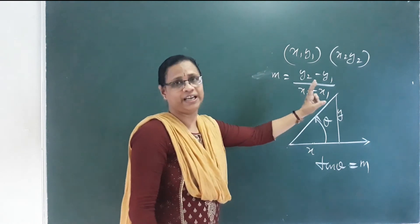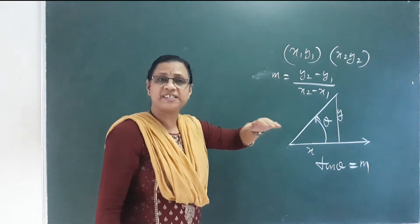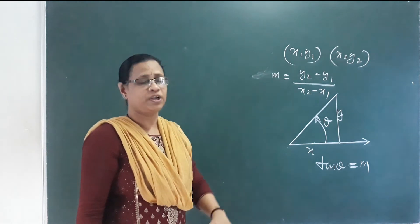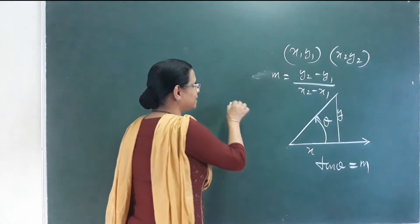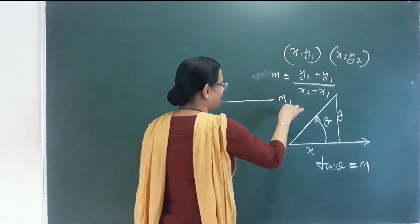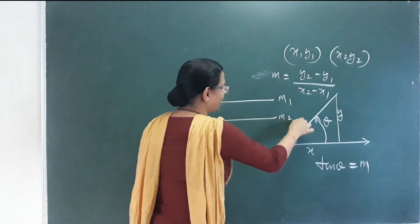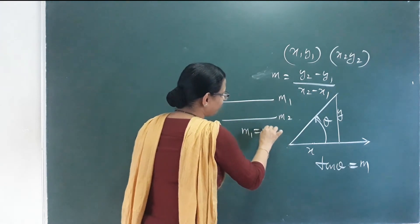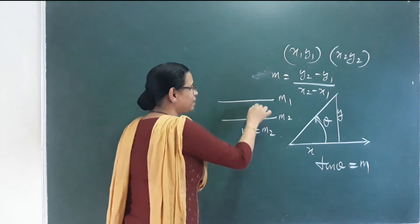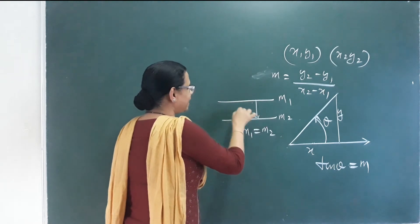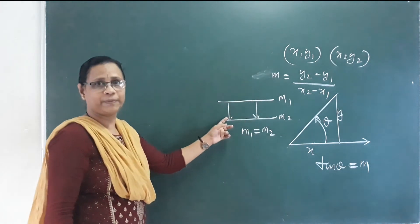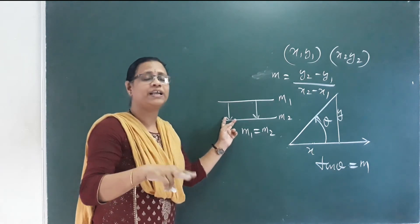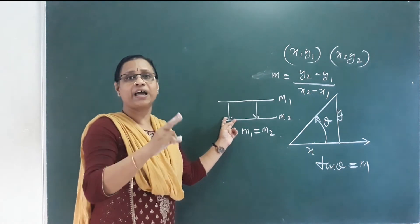There are two lines with slopes M1 and M2. If M1 equals M2, the lines are parallel — meaning they are the same distance apart.